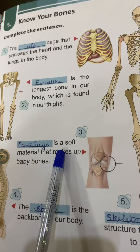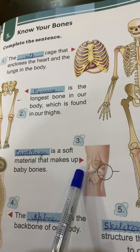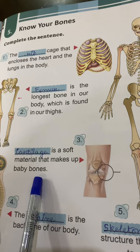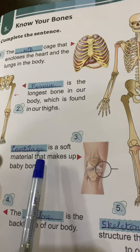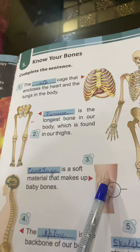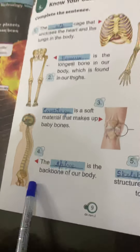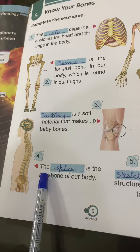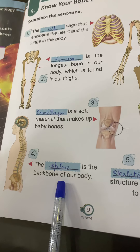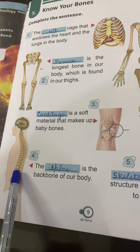Cartilage is soft material that makes up baby bones. It helps with movement of bones. The spine is the backbone of our body.